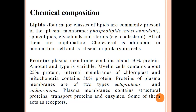Cholesterol is abundant in mammalian cells and absent in prokaryotic cells. The chemical composition of cell membrane also includes different types of proteins that help the cell for engulfment, throwing material outside, and movement of different ions and molecules. Plasma membrane contains about 50 percent proteins in its structure, though this varies by cell type. Myelin cells contain about 25 percent proteins. Internal membranes of spiroplasts and mitochondria contain almost 50 percent protein. Membrane proteins are of two types: endoproteins and ectoproteins.